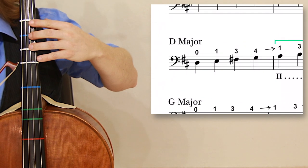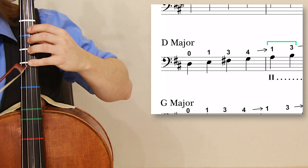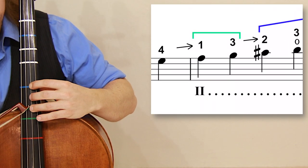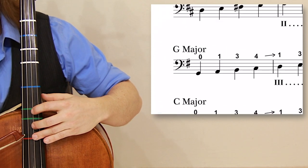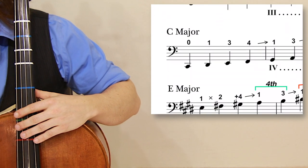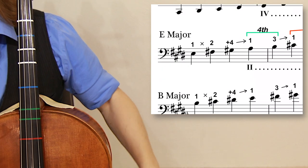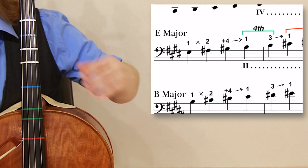On the D, the same fingering: zero-one-three-four, shift up to fourth position, then shift up one more time with a close two-three at the end. It continues the same for G and C—exact same fingerings. We'll have a little bit of a change with E major.